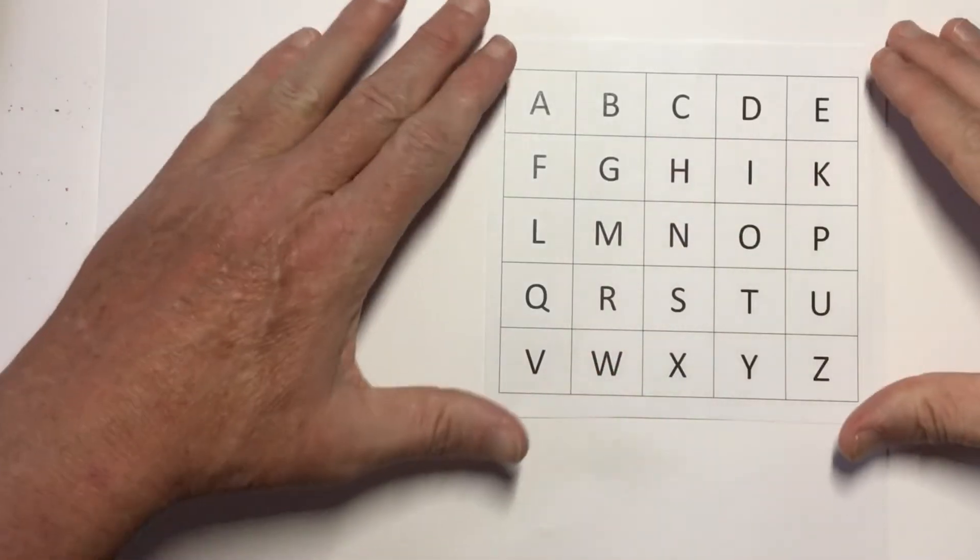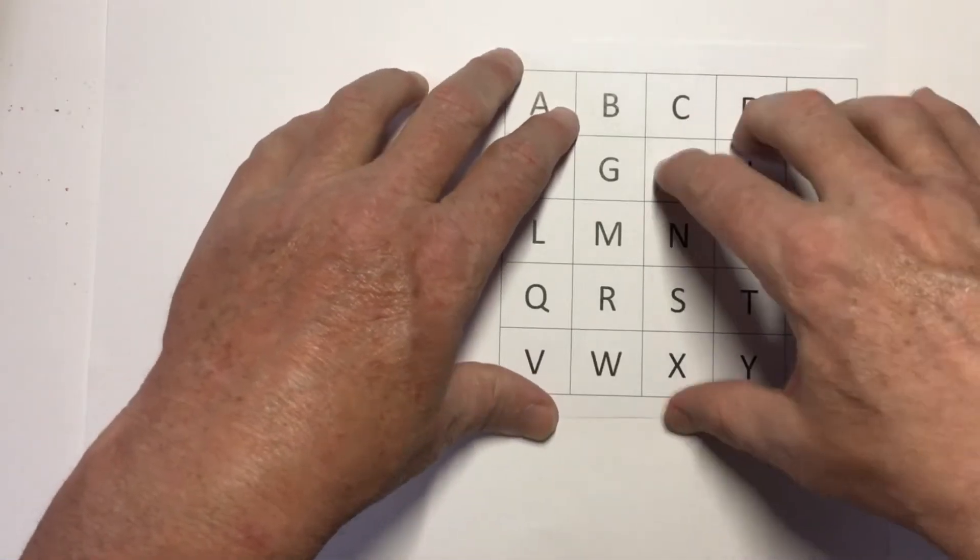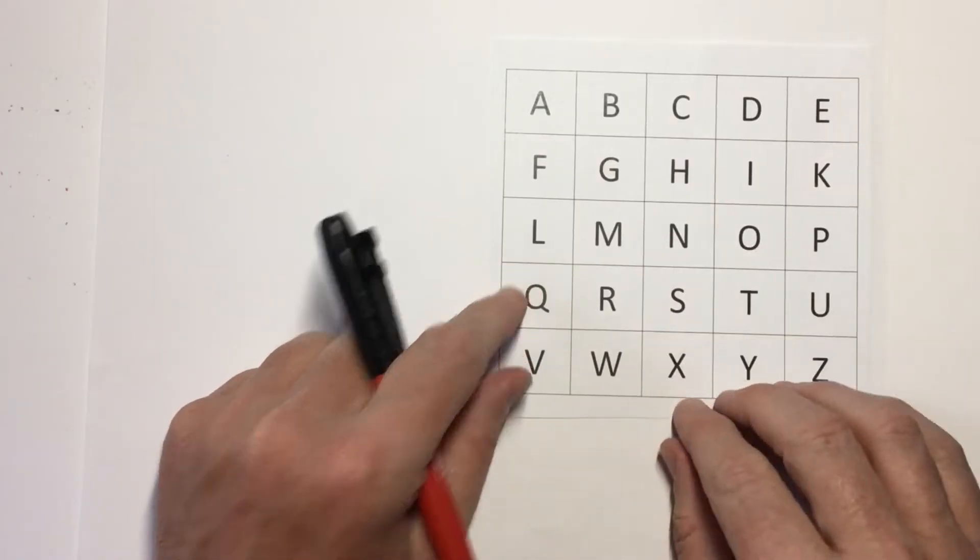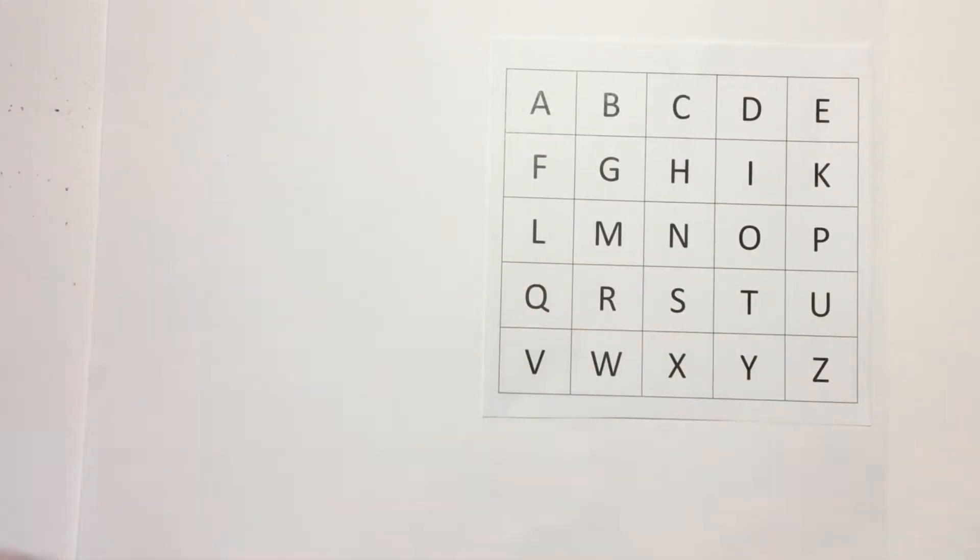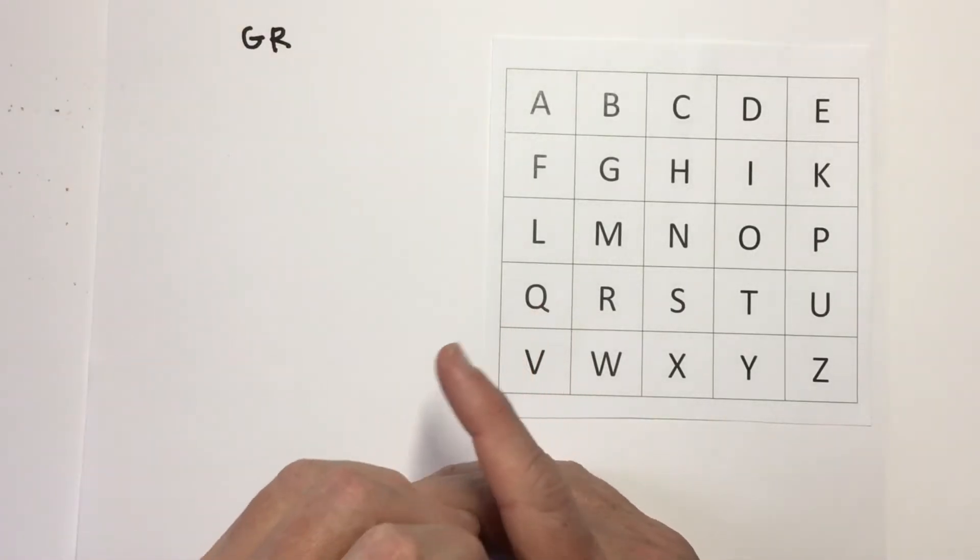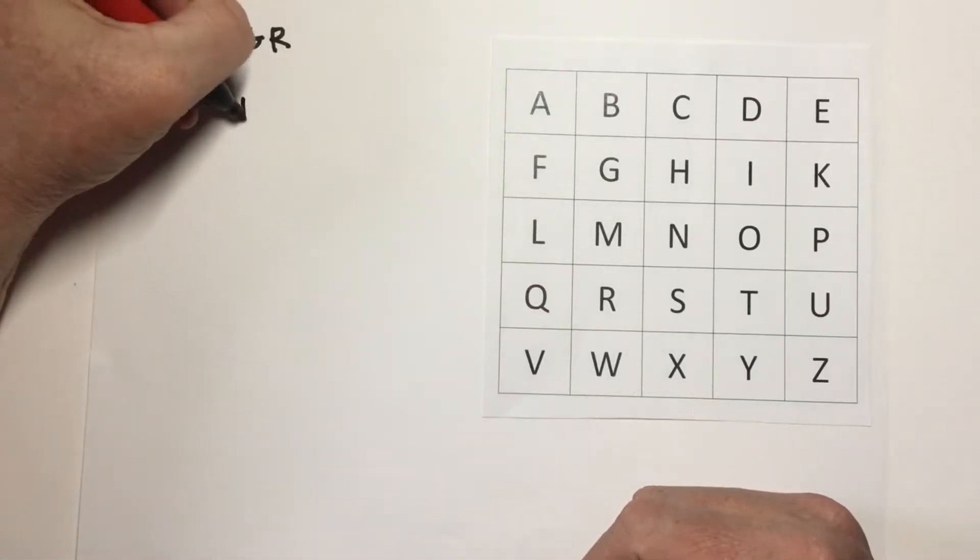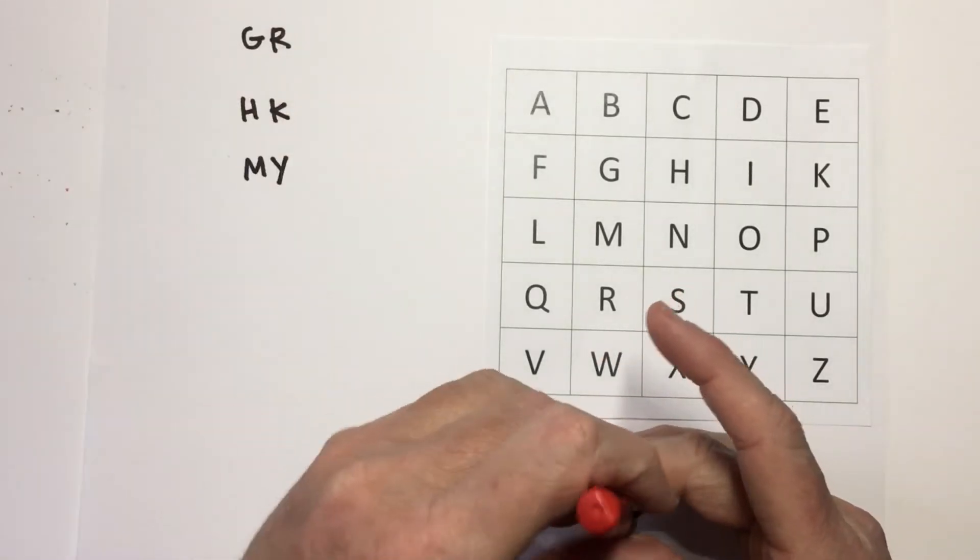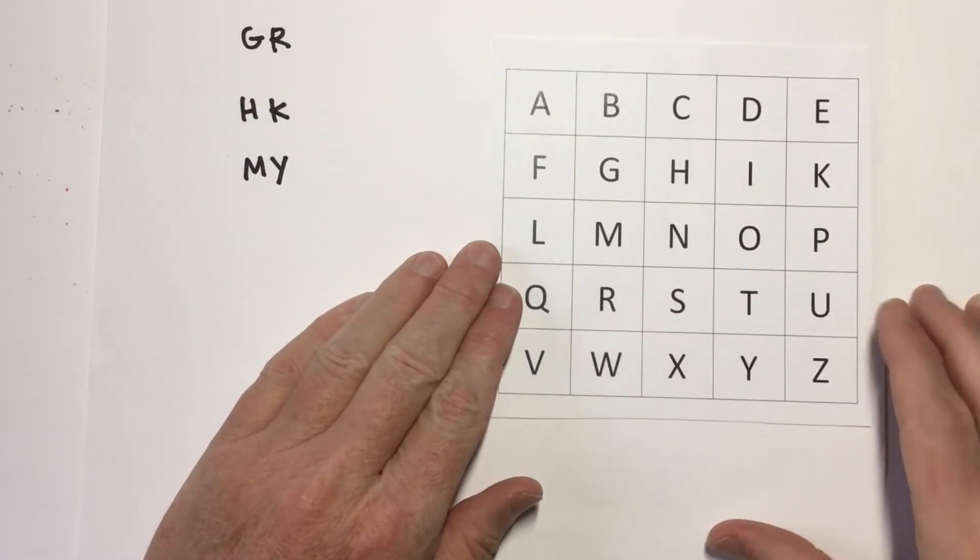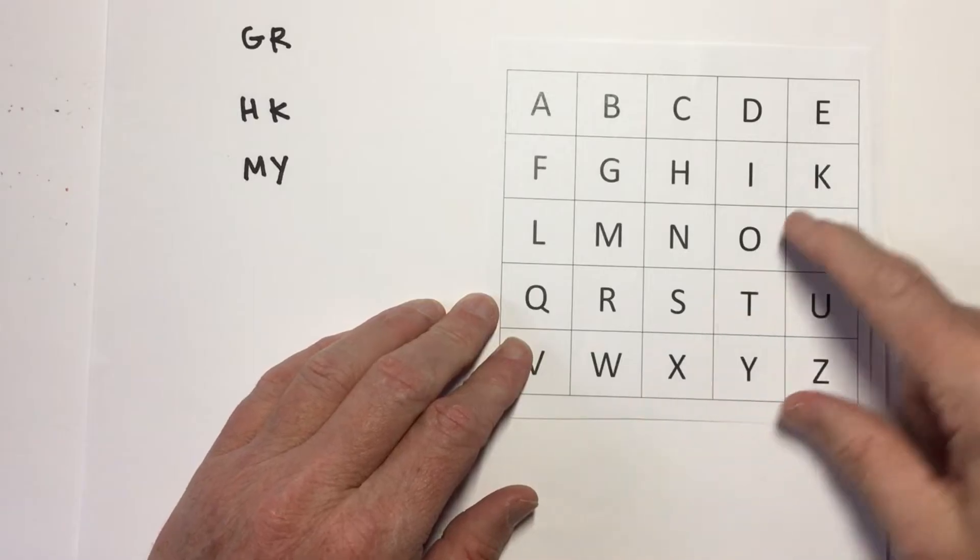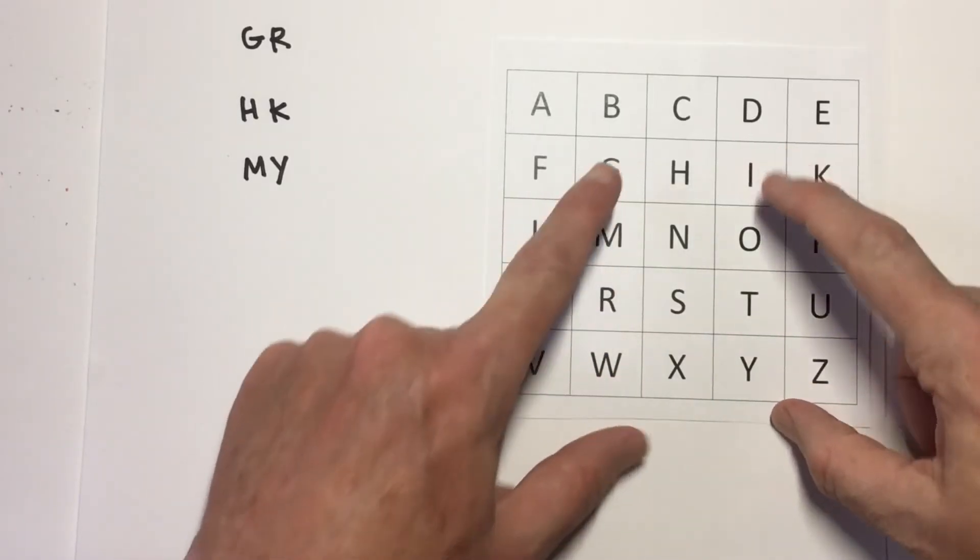We'll use this grid to write down our coded message. Now, if you pick any two letters in the alphabet in the grid, one of three things is going to be true. For instance, if I pick the letters G and R, compared to H and K and M and Y, any two letters in the grid, one of three things is going to be true. They're either going to be in the same row, in the same column, or they're going to form the corners of a box of some size.